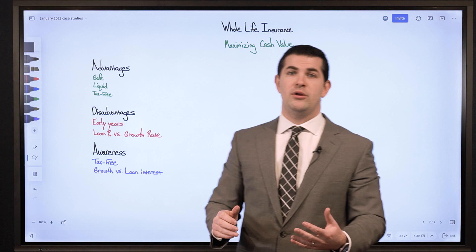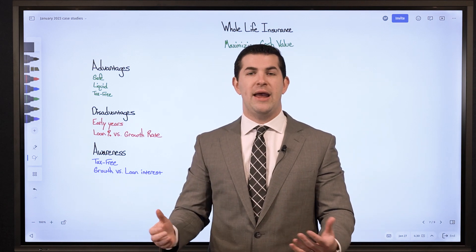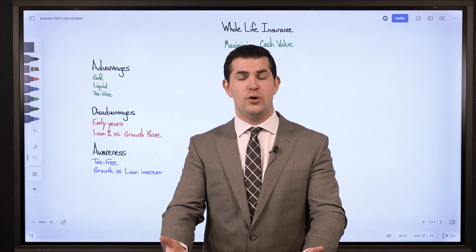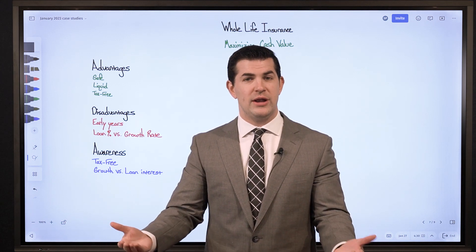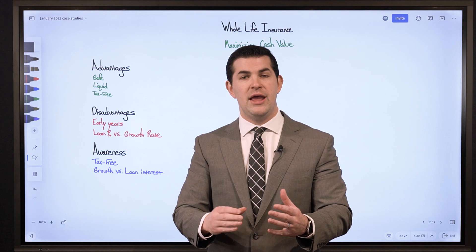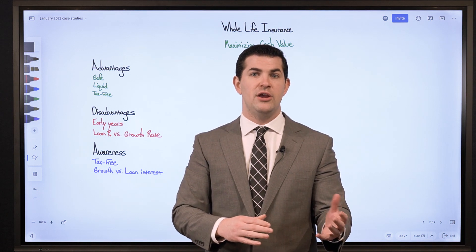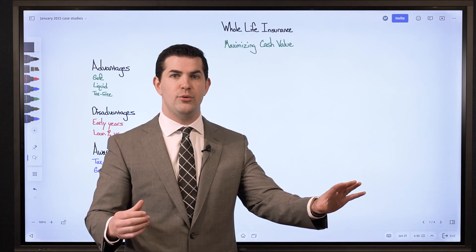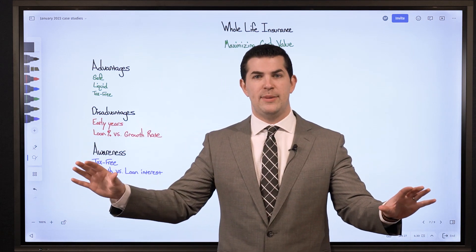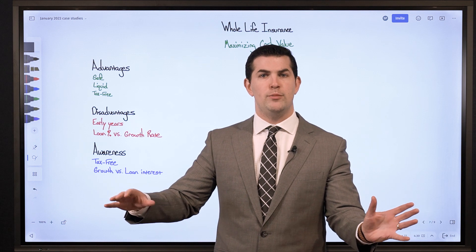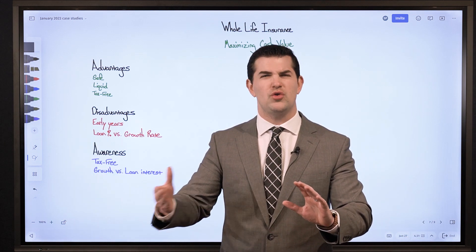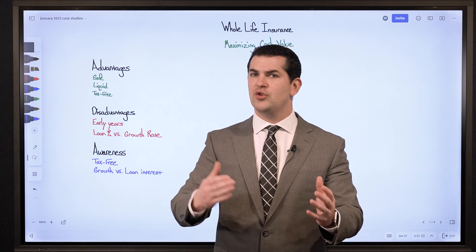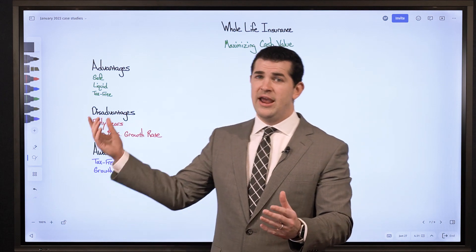Number two: liquid. We can access the cash value anytime. A unique feature of a cash value life insurance policy is policy loans. You can access a policy through a loan, and when you borrow against that policy, you continue to receive dividends and interest on any money still in cash value and on what you have loaned against the policy. It's very similar to borrowing against real estate, and a lot of real estate investors are attracted to it for this reason.